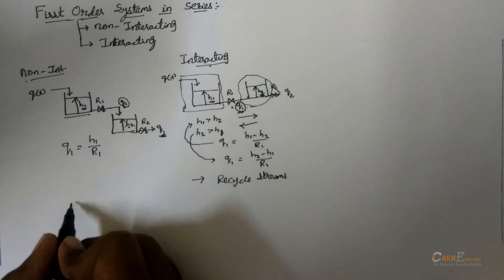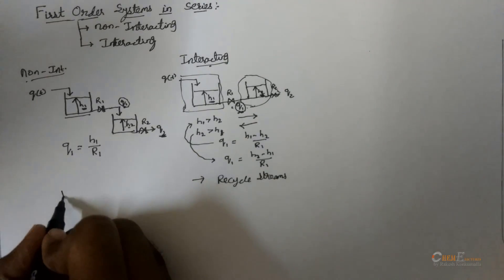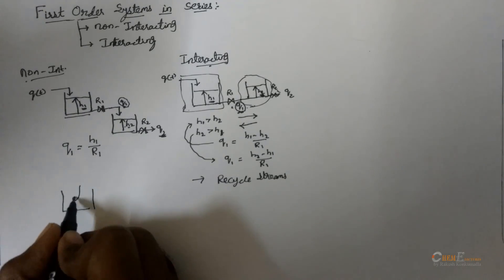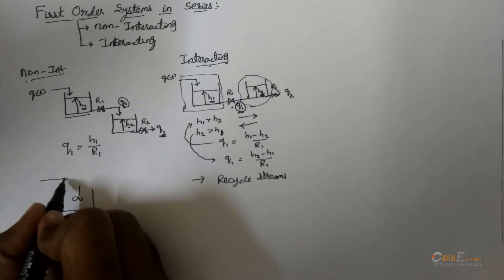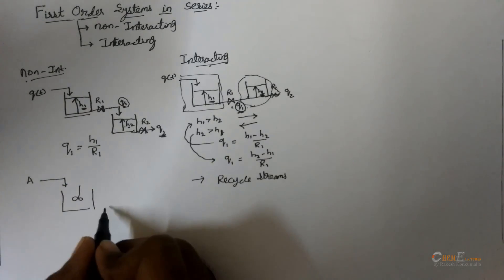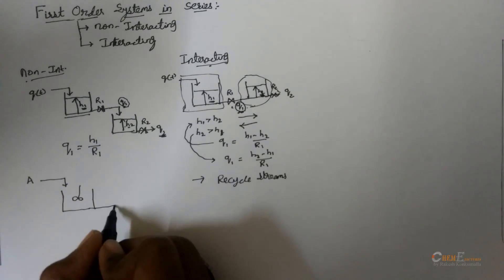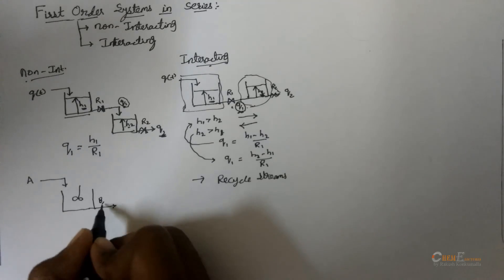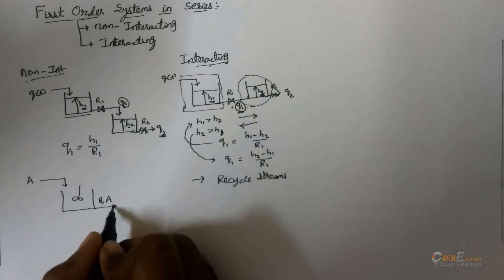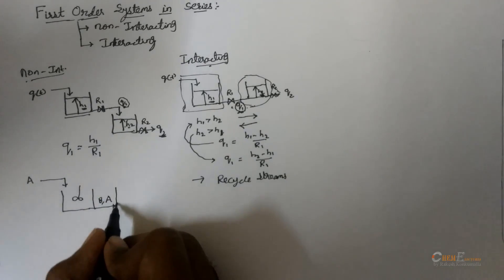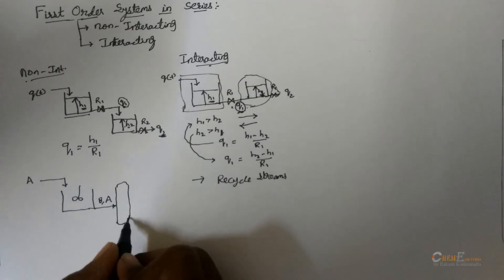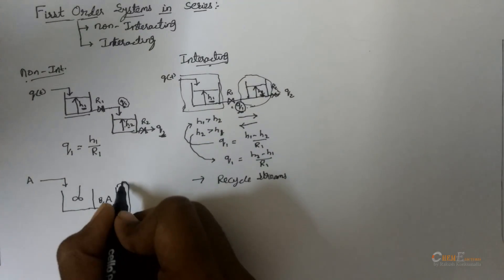Let me consider an example of having a chemical reactor. Feed A is sent and the outlet will be having the product and some contaminants of feed A, and it is given to a distillation column for the separation of product.